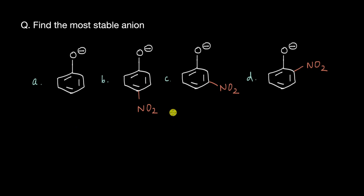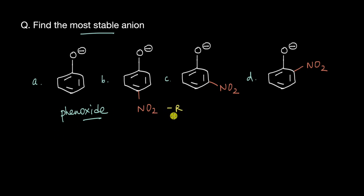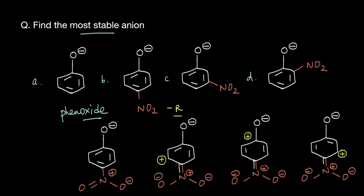Let's do another problem. We have a phenoxide ion with different nitro groups attached at different positions, and we need to find the most stable anion. The NO2 group is a minus-R group — it can withdraw electrons via resonance. Drawing the resonating structures, the pi electrons are withdrawn by the NO2 group, leading to the formation of resonating structures as the pi electrons shift further.